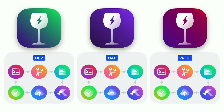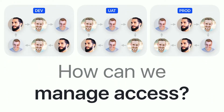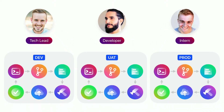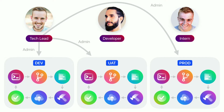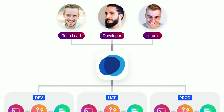With multiple environments and multiple people working on them, how can you manage access? Let's say we have a tech lead supervising the work, a developer building the application, and an intern trying not to break things. These people need different types of access depending on the environment. The tech lead probably needs admin in all environments. The developer may need admin on dev, read and write on UAT, but can't change anything on production. And the intern can only see what's going on and maybe has write permissions on dev.